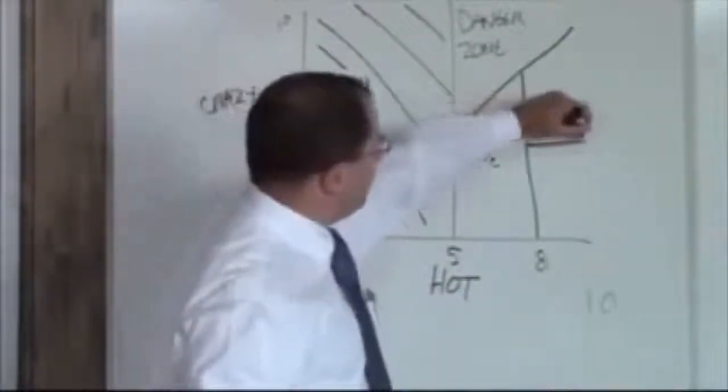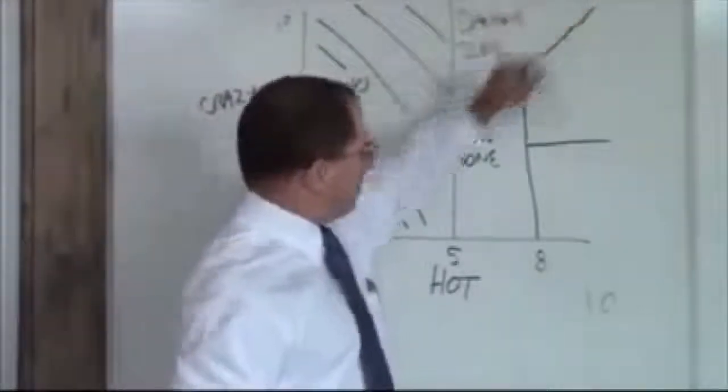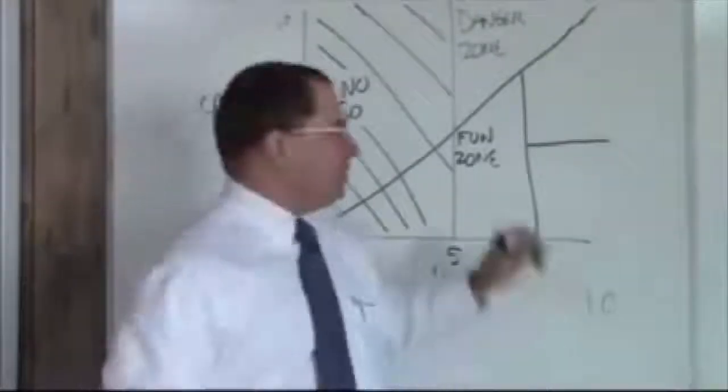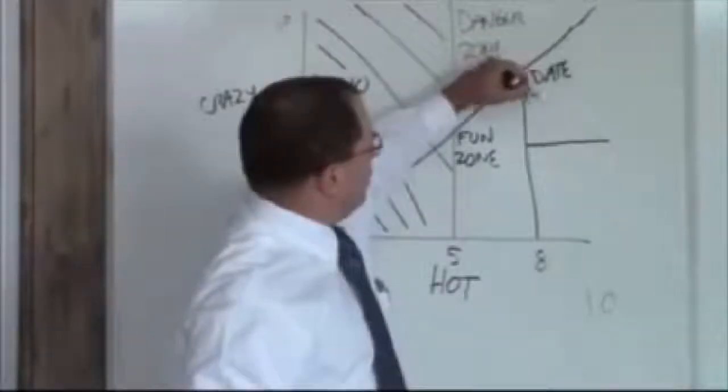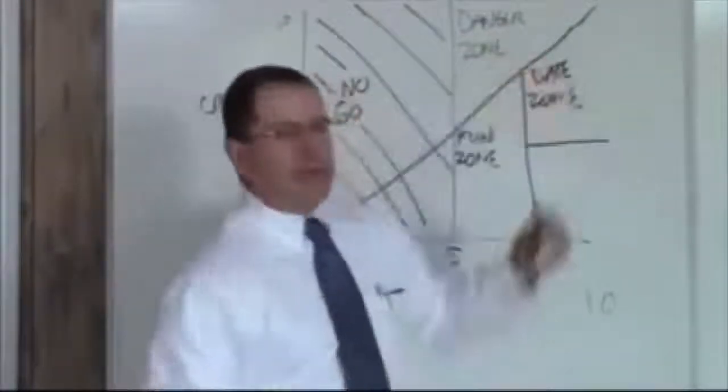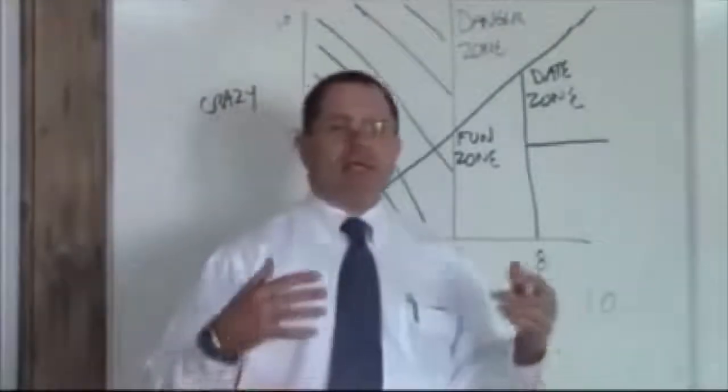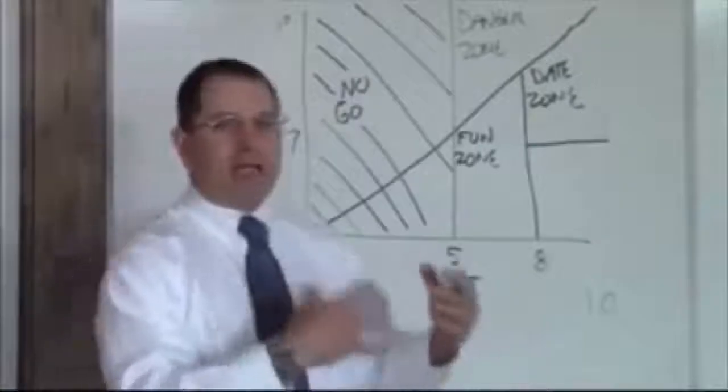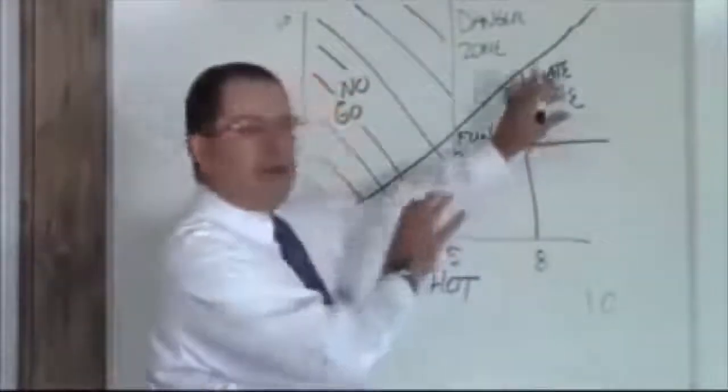you have this zone here. This is below the crazy line, above an eight hot, but still about a seven crazy. This is your date zone. You can stay in the date zone indefinitely. These are women that you introduce to your friends and your family. They're good looking and they're reasonably not crazy most of the time. So you can stay here indefinitely.